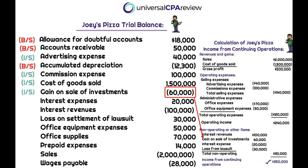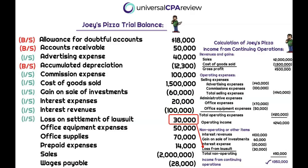Gains on the sale of an investment are reported on the income statement — not the balance sheet — in the non-operating section. Interest expenses and interest revenue are also included in the non-operating section. Losses on the settlement of a lawsuit are reported on the income statement, also in the non-operating section. Office equipment expenses — note that 'expenses' indicates it's an income statement item, reported as an administrative expense in the operating section. Same for office supplies — those are administrative expenses in the operating section.